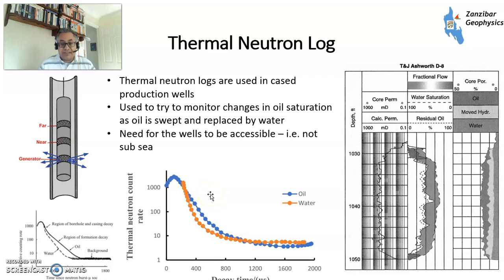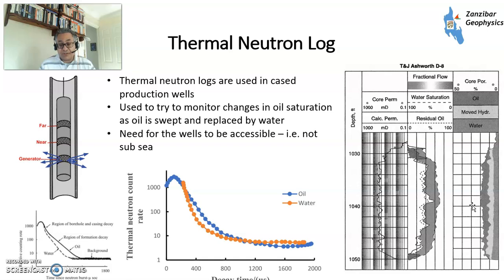Thermal decay neutron logs are run in cased holes because conventional resistivity tools don't work behind steel pipe. You would use them to monitor hydrocarbon saturation movement over time. When working in a producing oil field with water drive, SW will increase as water displaces oil, and you need to monitor this for your reservoir model. You would run a thermal decay neutron tool to see what has happened to saturation since production started. Obviously you need well access, so this can't be done in subsea wells, but is possible from platforms or land wells.